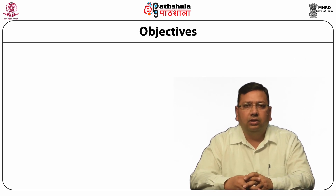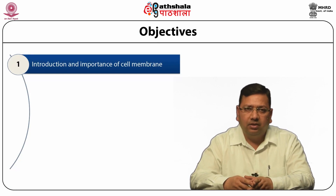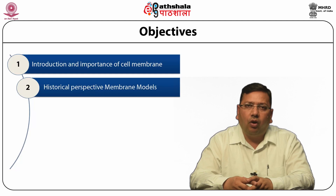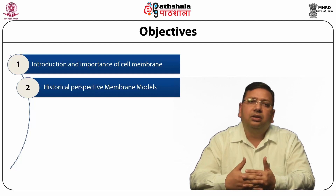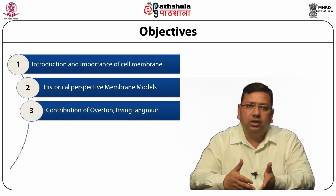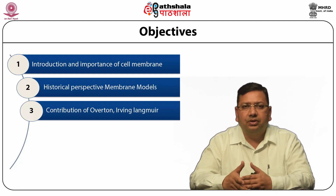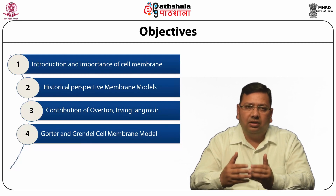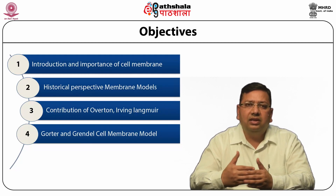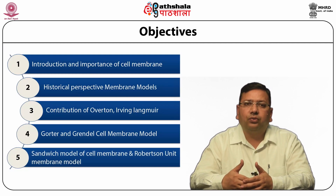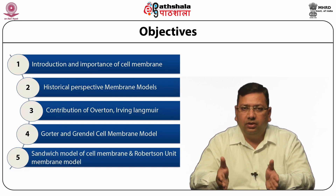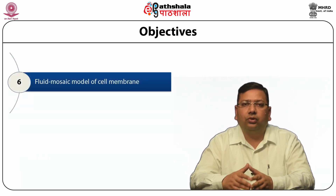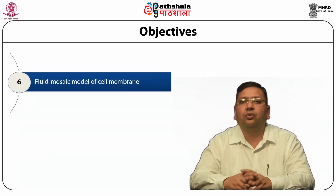Firstly, the introduction and importance of cell membrane. Secondly, the historical perspective of all membrane models. Thirdly, the contribution of Overton and Irving Langmuir. Then, Gorter and Grendel's cell membrane models are discussed. Then lastly, the sandwich model of cell membrane and Robertson's unit membrane model is discussed. And finally, the fluid mosaic model of cell membrane is discussed.